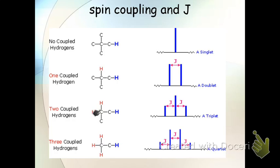And continuing on, if you have two hydrogens, then what you end up getting is a triplet, and three hydrogens is a quartet.